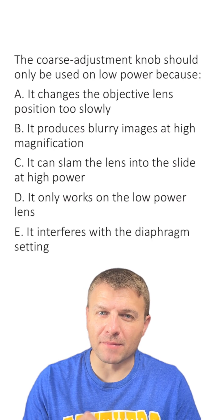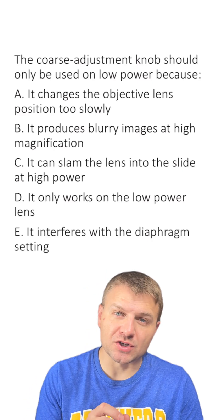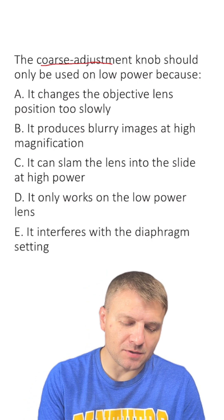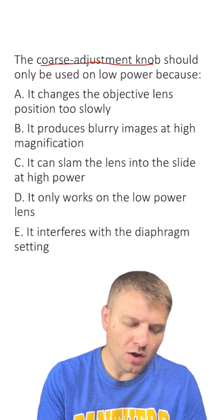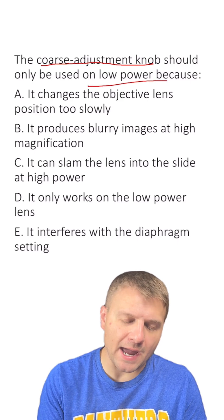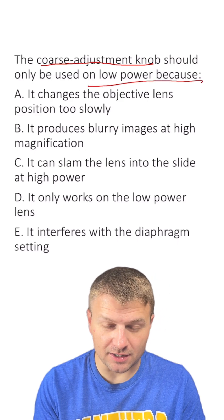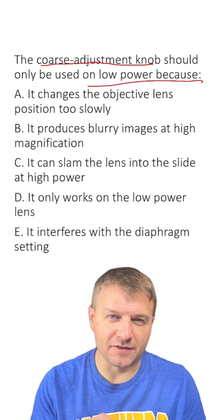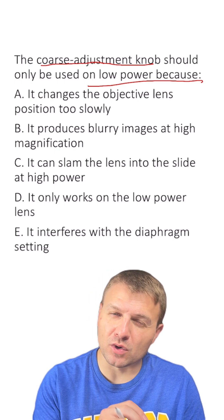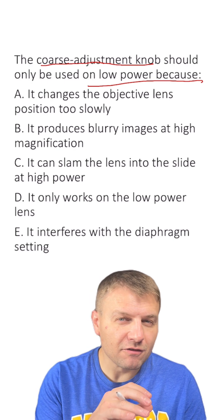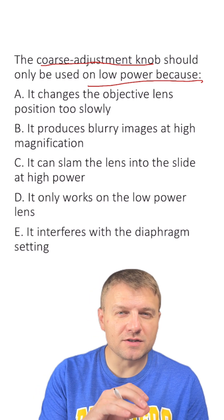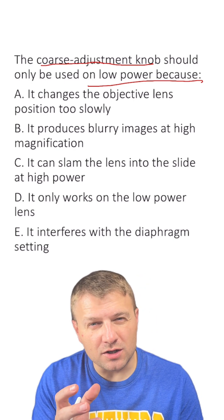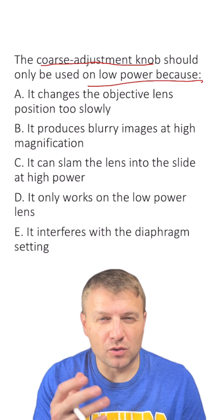Can you answer this multiple choice question about a microscope? The question reads: the coarse adjustment knob should only be used on low power because... Remember that on a microscope we have two different types of adjustment knobs — the coarse and the fine. The fine moves the stage typically very slowly, while the coarse moves it a lot more quickly.